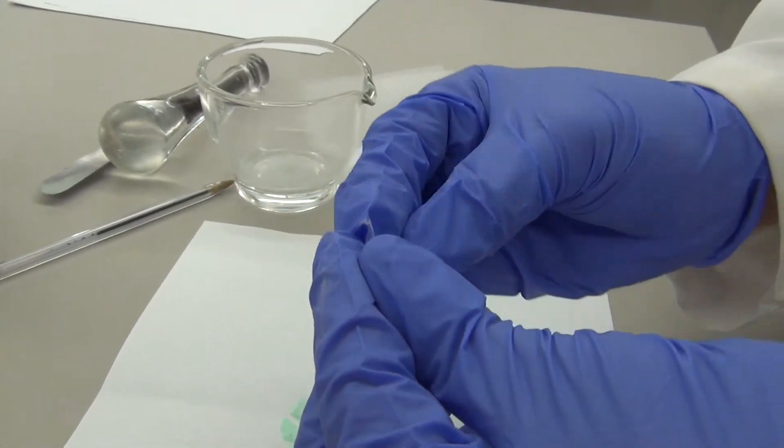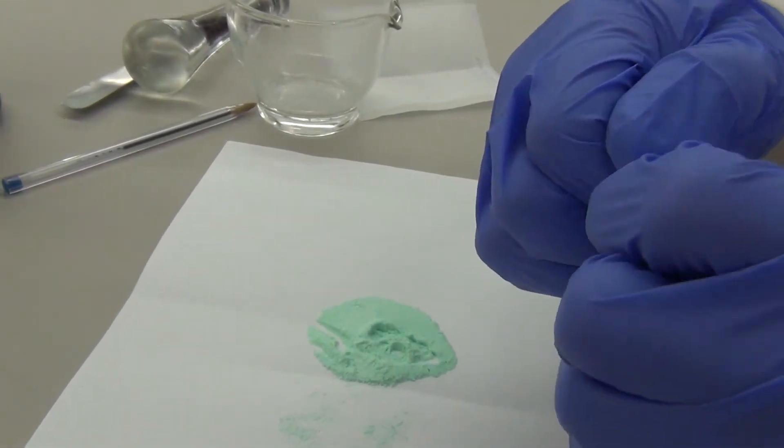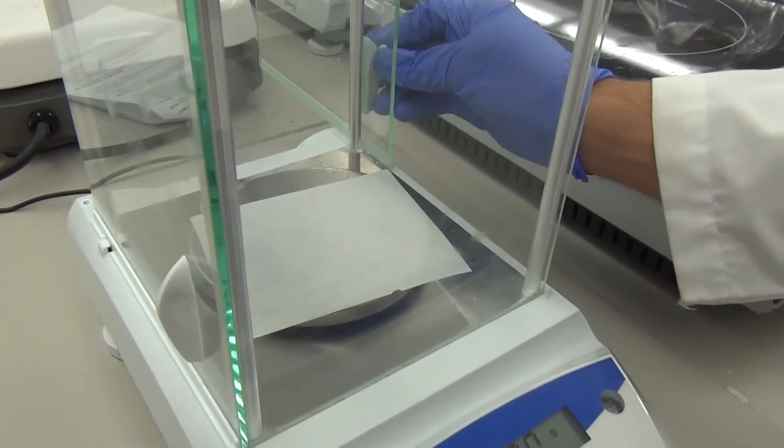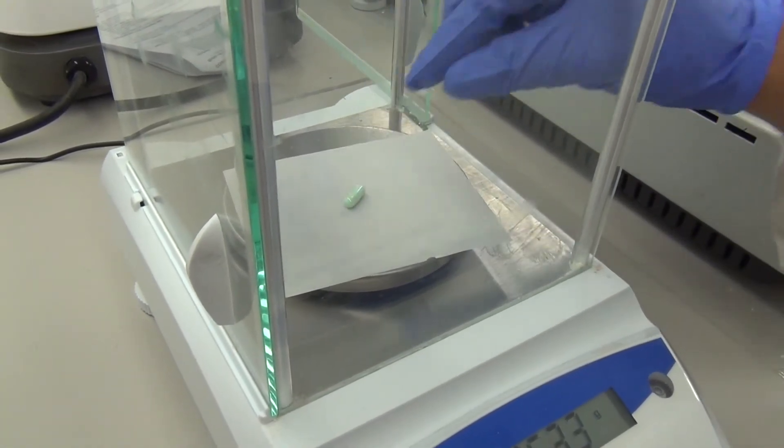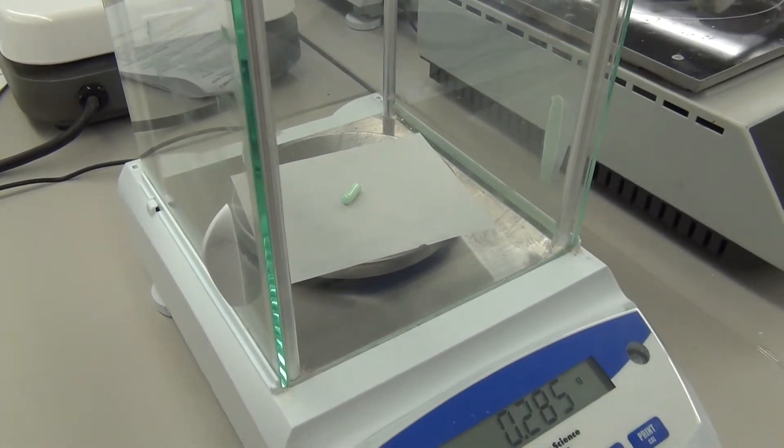Only close the capsule part way. Do not lock the capsule in case the weight is not correct. Make sure you zero the balance with a weighing paper and an empty capsule. Your goal is to get within five percent of the calibration weight.